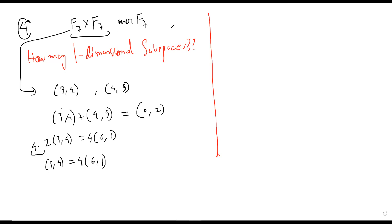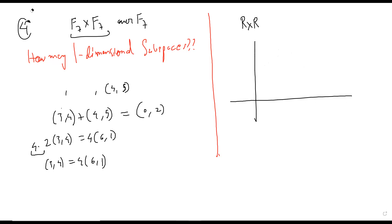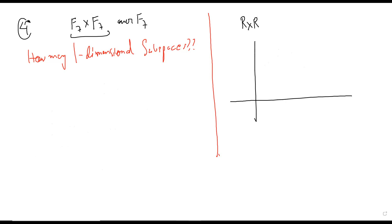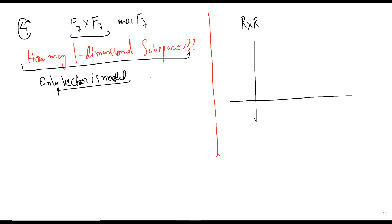Let me tell you a few ideas. If you are in R cross R, how did we say there are infinitely many subspaces? Basically, to get a one-dimensional subspace you just need a vector, right? For every one-dimensional subspace, only one vector is needed. Everyone agree? You just need one vector, and you take all multiples of that vector and get your one-dimensional subspace.